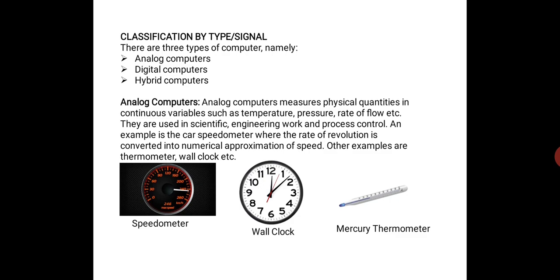Analog computers. These are computers that measure physical quantities in continuous variables, such as temperature, pressure, rate of flow, etc. They are used in scientific, engineering work and process control. The computer works or processes data in a continuous form until it gets to where it has to stop.